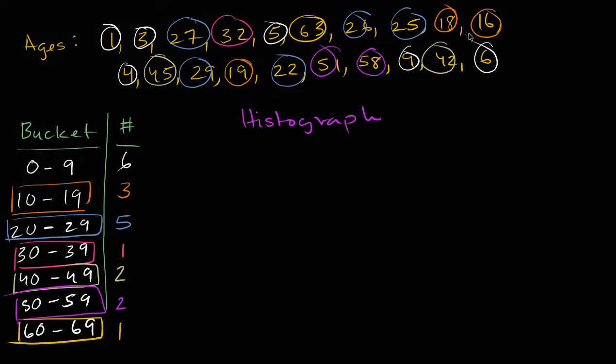We're taking data that can take on a whole bunch of different values. We're putting them into categories. Then we're going to plot how many folks are in each category. How big are each of those categories? And actually, I wrote histogram. I should have written histogram. So a histogram. So let's do this.